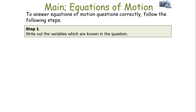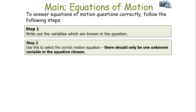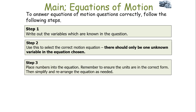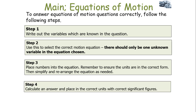To answer equations of motion questions correctly, follow these steps. Step one: write out the variables you know. Step two: select the correct motion equation — either A equals V minus U over T, or V squared minus U squared equals 2AS. You know which equation is correct because there should be only one unknown variable. Step three: place the numbers into the equation, making sure units are in the correct form — kilometres to metres, minutes to seconds, kilometres per hour to metres per second — then simplify and rearrange as needed.